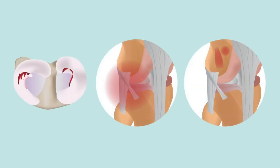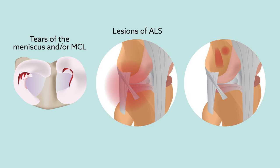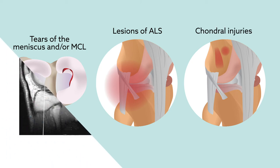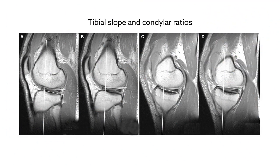The researchers performed a comprehensive evaluation of soft tissue and bone parameters. Soft tissue injuries included tears of the meniscus and/or MCL, lesions of anterolateral structures (ALS), and chondral injuries. Bone-related parameters such as tibial slope and condylar ratios were determined using established MRI procedures.